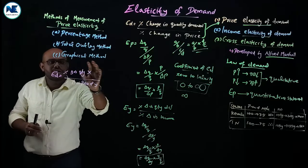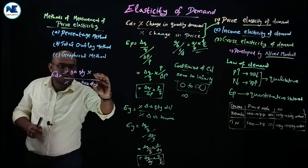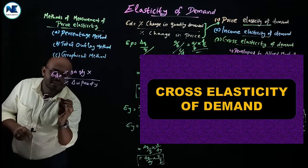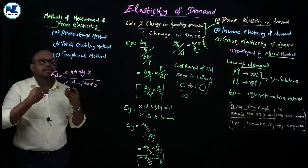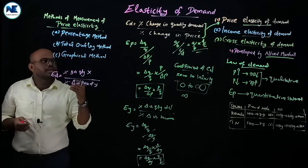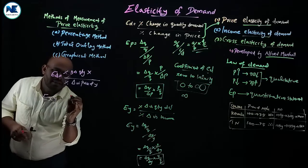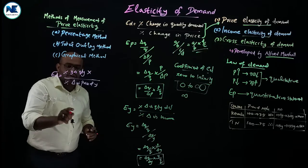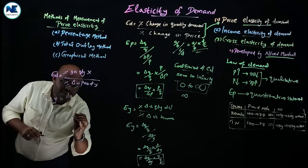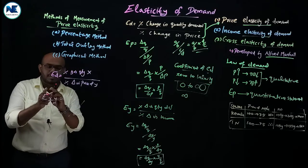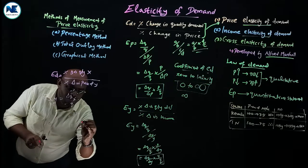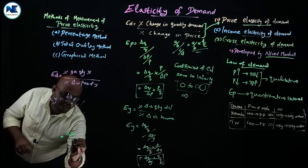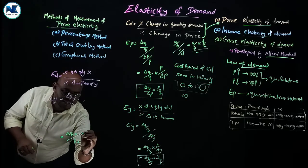Mathematically, the coefficient of cross elasticity of demand — that is, the cross elasticity of quantity demanded of X with respect to the price of Y — is: (ΔQx/Qx) ÷ (ΔPy/Py). Simplifying, the division becomes multiplication, giving us: ΔQx/ΔPy × Py/Qx. Here, Qx is the initial quantity of X, Py is the original price of Y, and ΔPy is the change in price of Y.